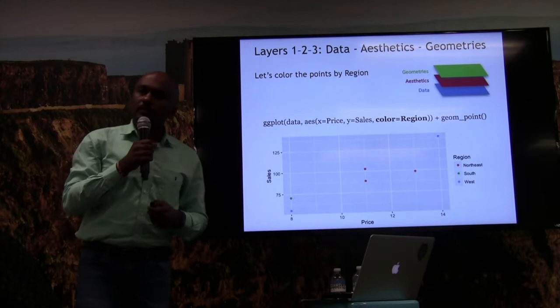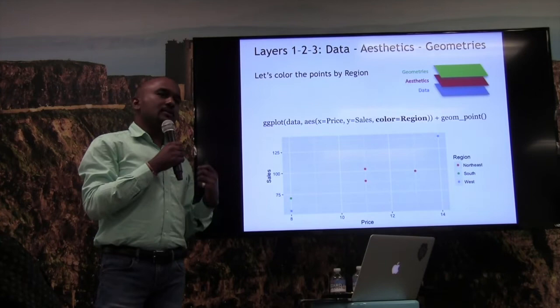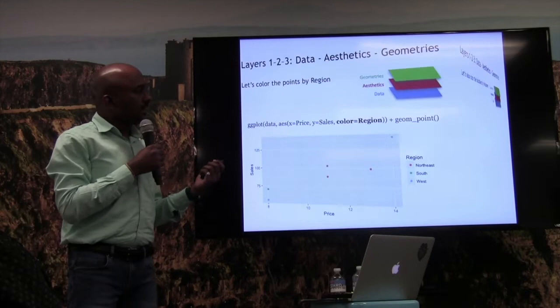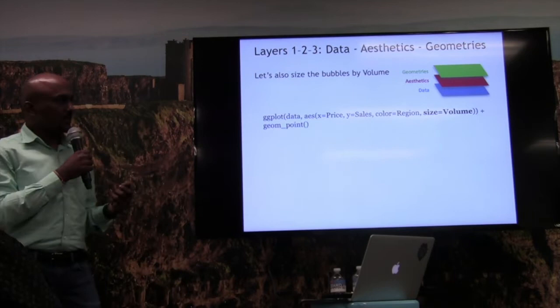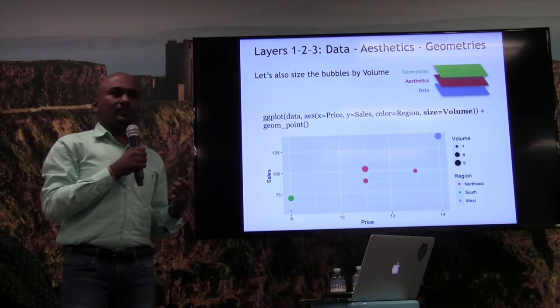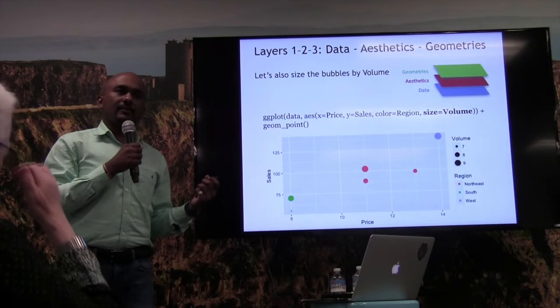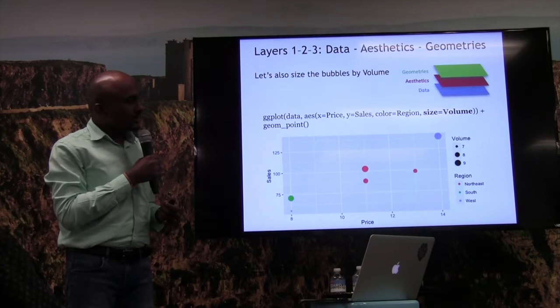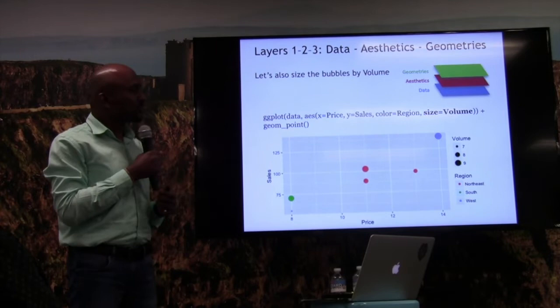It will also be useful to bring in the volume element. The question is: do we have cities selling at a low price but high volume? We can use size as a variable — we bring size into the aesthetic layer and say 'size equals volume.' The plot then changes and the points take on a size, creating what is called a bubble chart. Now we can see the south region has low price, low sales, and low revenue, whereas one city in the west has high sales, high price, and high revenue.